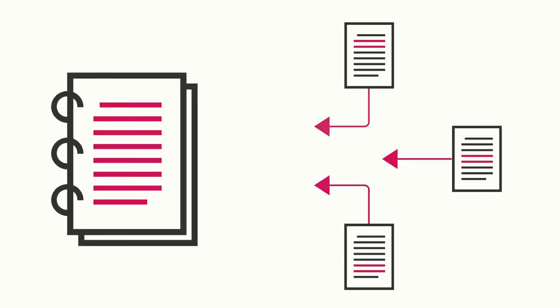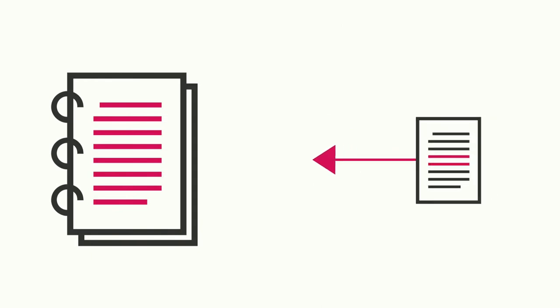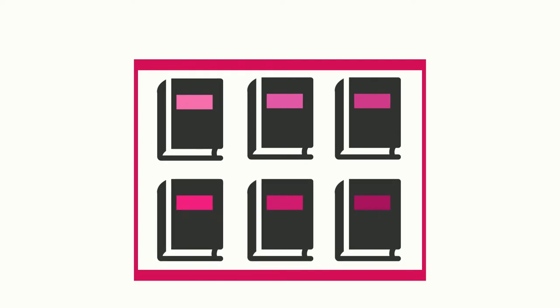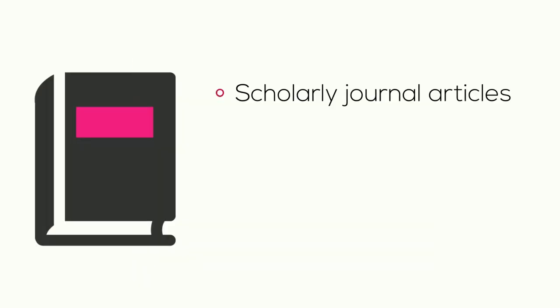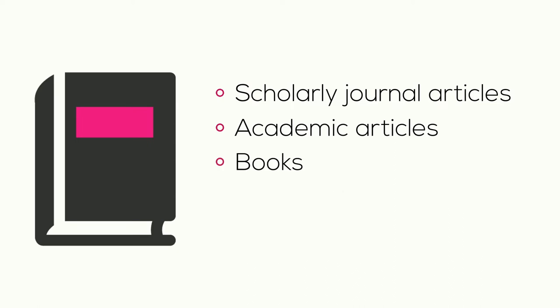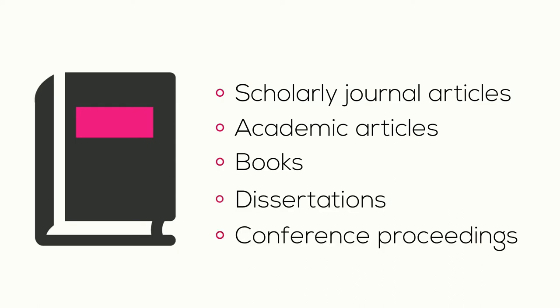A literature review is a scan of previous research that integrates multiple sources throughout a paragraph or section, unlike an annotated bibliography, which focuses on one article at a time. What is included as literature can depend on your subject area, but typically it is a selection of scholarly writings on a particular topic. It can include scholarly journal articles, academic articles, books, dissertations, conference proceedings, and more.